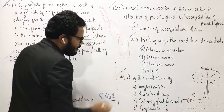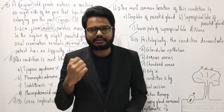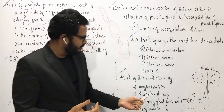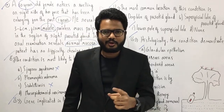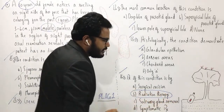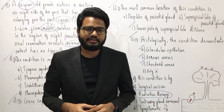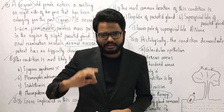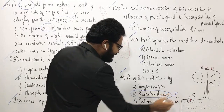Finally, how do you treat pleomorphic adenoma? The options are: surgical excision, radiation therapy, salivary gland removal, or symptomatic treatment through pharmacological measures. Pleomorphic adenoma tumors are relatively radio resistant, so radiotherapy is contraindicated. You can rule out radiation therapy and all-of-the-above. Symptomatic treatment is also not applicable since most cases are asymptomatic with no facial paralysis or pain.